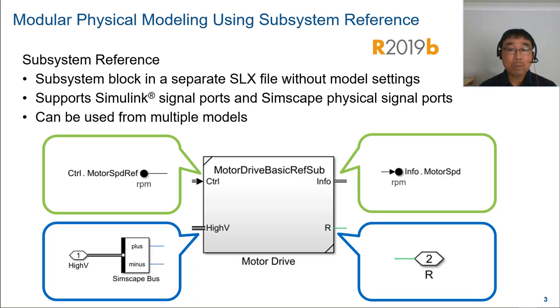For example, you can test the motor drive block and battery block independently in separate test harness models. You can also use the same motor drive and battery blocks in a single model file like a BEV model.